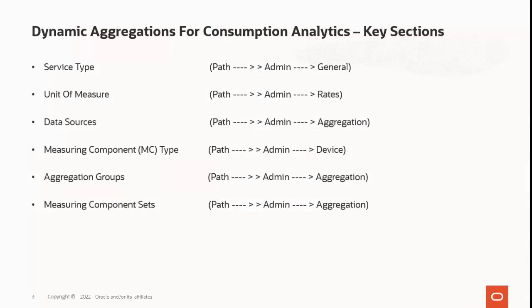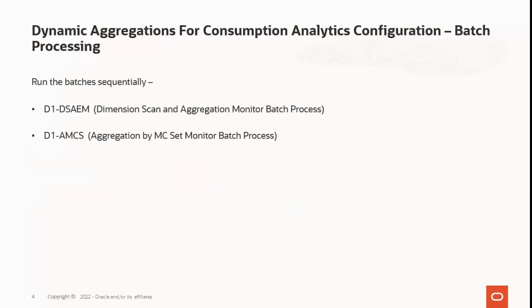Now let's do the demonstration to run this functionality. We need to run the batches sequentially. First is D1DS-AEM (Dimension Scan and Aggregation Monitor batch process), and the second is D1-AMCS (Aggregation by MCS Set Monitor batch process). The D1DS-AEM batch will initiate processing for all aggregation groups and run all monitor algorithms on each aggregation group.